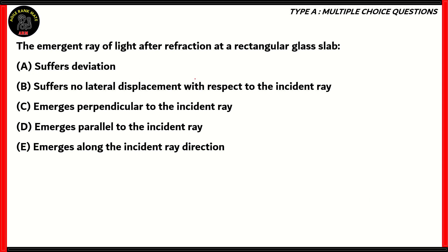Now let's look at another question. The emergent ray of light after refraction at a rectangular glass slab: A suffers deviation, B suffers no lateral displacement with respect to the incident ray, C emerges perpendicular to the incident ray, D emerges parallel to the incident ray, E emerges along the incident ray direction. So how do we solve this question? Well, for that, we need to find out, we need to draw out a diagram of refraction of a light ray in a rectangular glass slab.